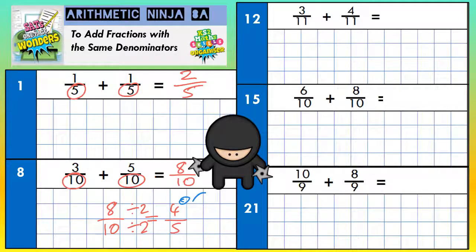Number twelve. Three-elevenths add four-elevenths. Well, three crocodiles add four crocodiles would be seven crocodiles. So three-elevenths add four-elevenths would be seven-elevenths because the unit we're dealing with is elevenths.